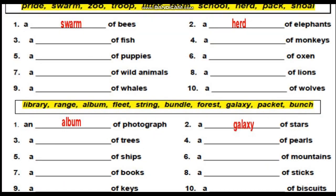Look at group 2, number 1: a swarm of bees. Number 2: a herd of elephants. Similarly, fill the rest of the blanks. Look at group 3, number 1: an album of photographs. Number 2: a galaxy of stars. Now complete the rest of the blanks independently.